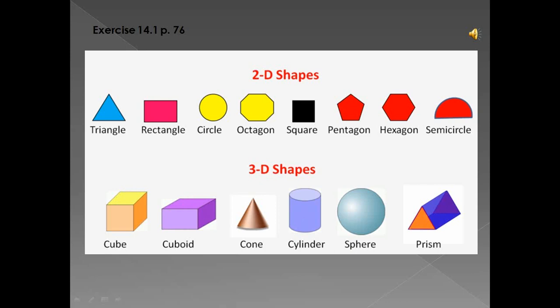Now we're going to look at exercise 14.1 on page 76. You get different names for 2D and 3D shapes. In 2D you get a triangle, rectangle, circle, octagon, square, pentagon, hexagon, and semicircle — they are flat shapes. But 3D shapes look different: you get a cube, cuboid, cone, cylinder, sphere, and prism. In this exercise you're going to identify different 2D and 3D objects, say whether they are 2D or 3D, and then look around your house for examples of 2D and 3D shapes.